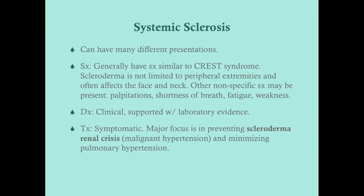Systemic sclerosis can have many different presentations. These patients generally present similarly to CREST syndrome, but on history and physical you'll see signs of multi-systemic involvement. Look particularly for scleroderma not strictly limited to peripheral extremities but affecting the face and neck — loss of normal wrinkles expected for the patient's age. Non-specific symptoms include palpitations (related to congestive heart failure), shortness of breath (related to pulmonary fibrosis), and fatigue and weakness.